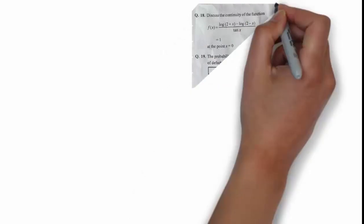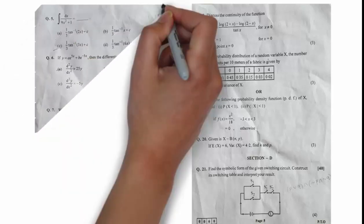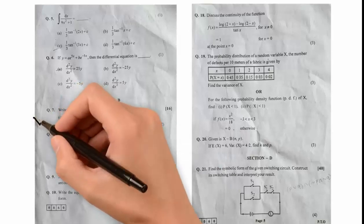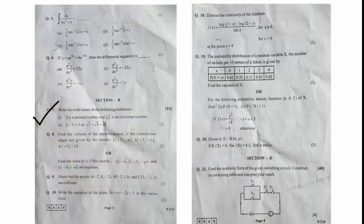In the March 2019 board question paper, there is question number 7 in section B that carries 2 marks, and question number 21 in section D that carries 4 marks. These are very simple questions.